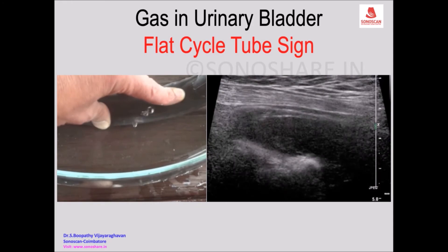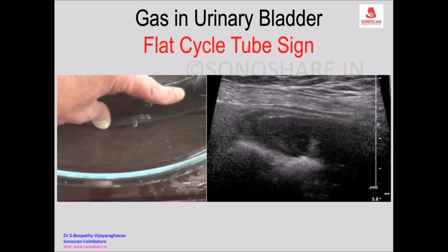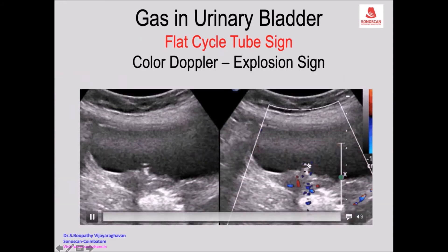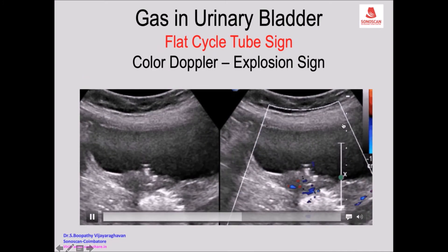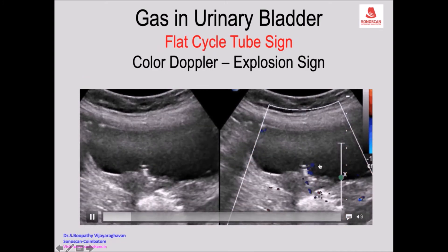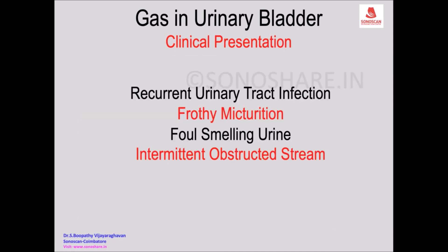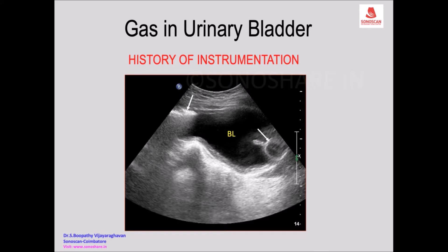Now with all this you have confirmed that there is gas within the urinary bladder. When you put on color Doppler you see a lot of color due to color bleeding, because of the mark that can cause intermittent obstruction to the urethra - so the patient may present as an intermittent obstructed stream. The Foley bulb is proof of instrumentation, but if the catheter had been removed, consider other causes.